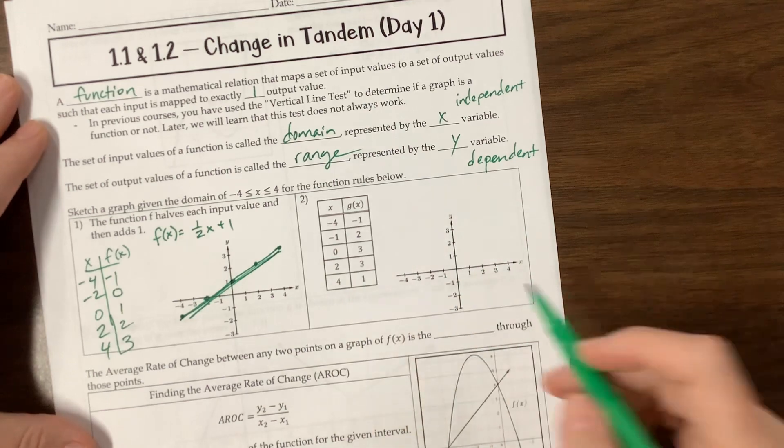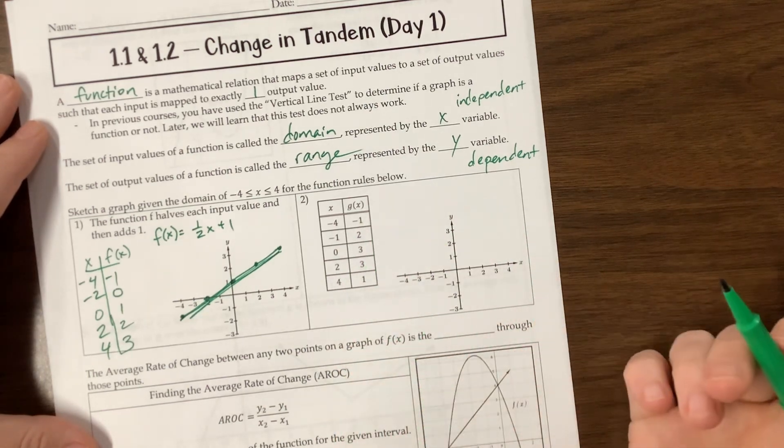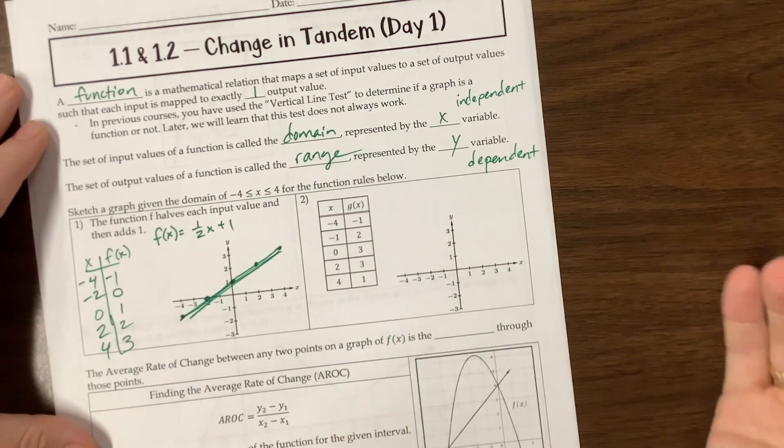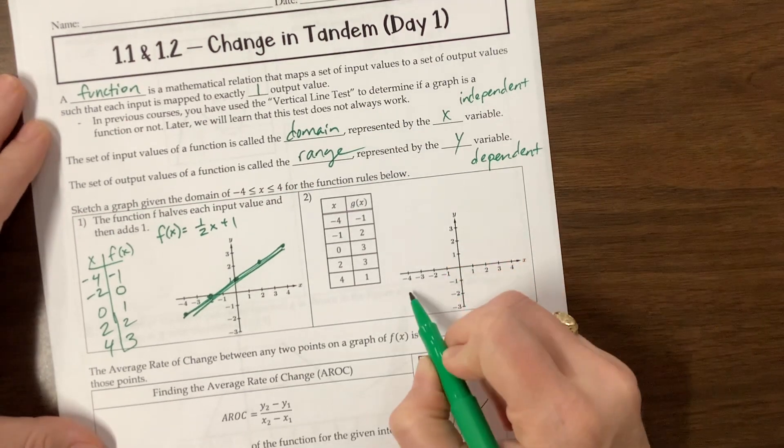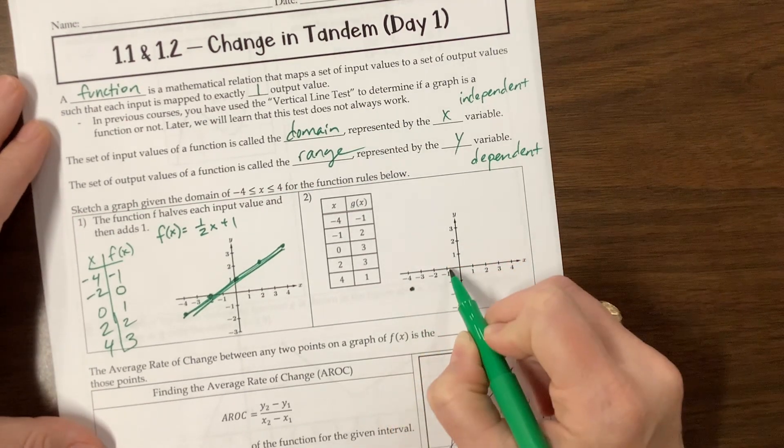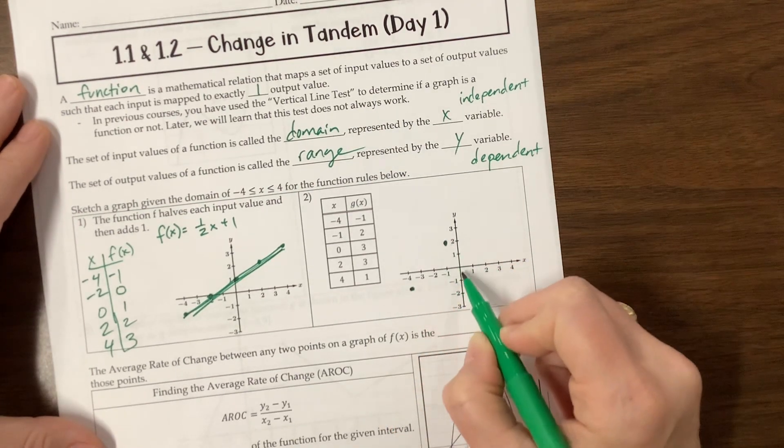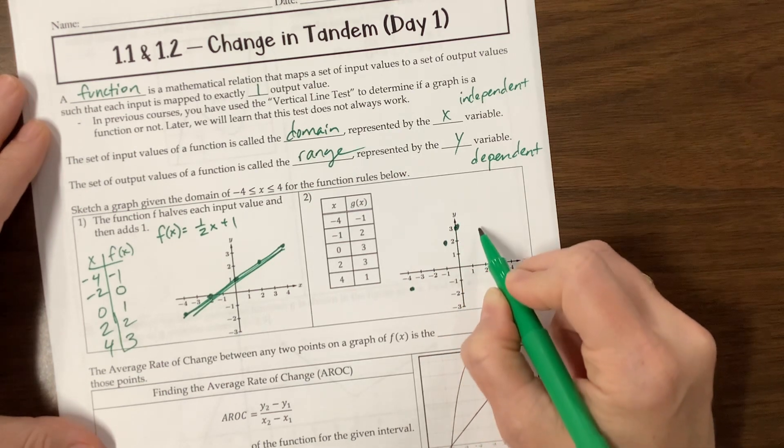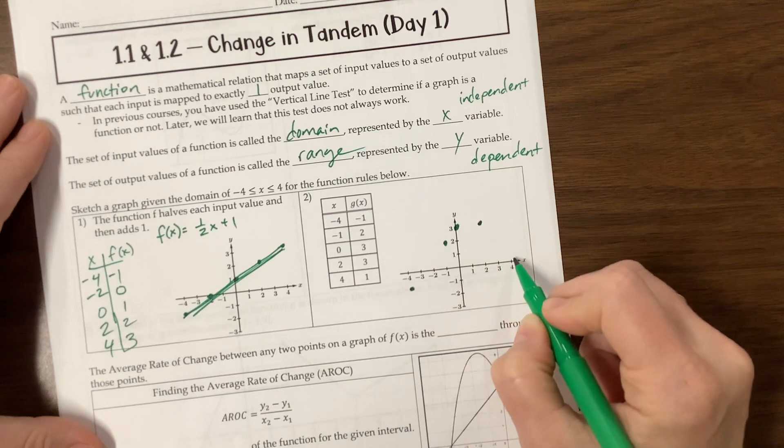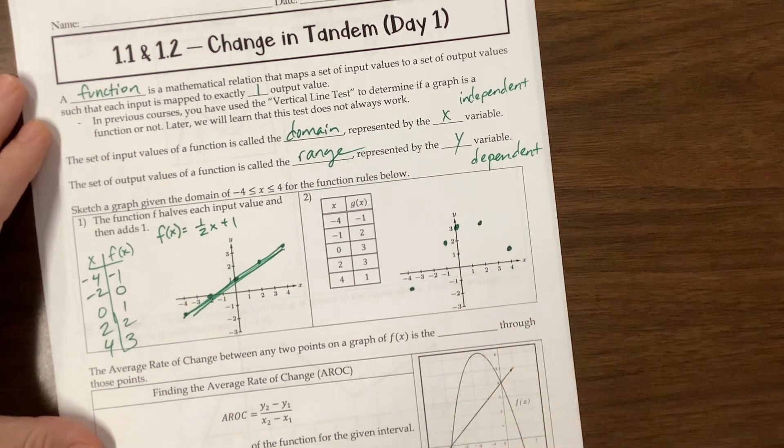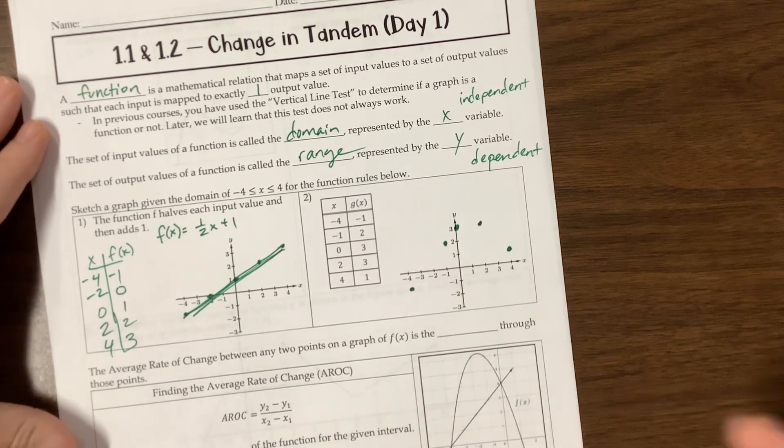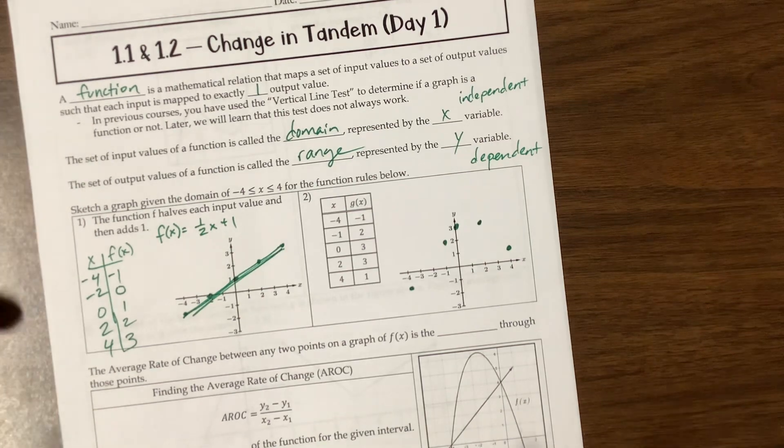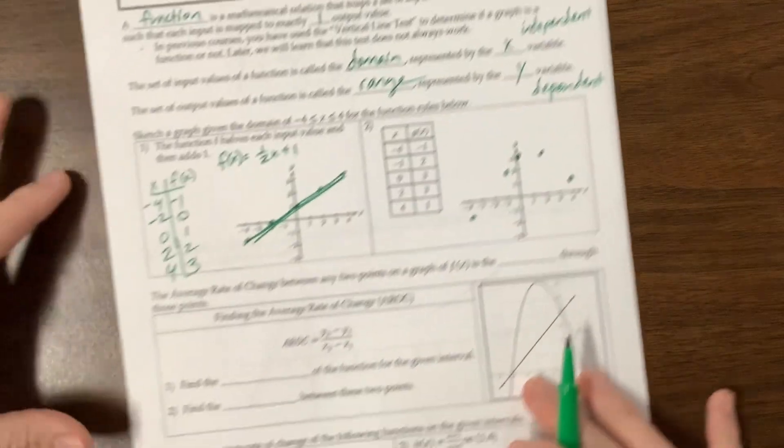The next one, all they've given us are these, what is that, 5 points. And we don't know anything that's happening between them, so we would just plot those points. Negative 1, 2, I'm roughly in the right spot. 0, 3. I'm back to, where am I? 2, 3, 4, 1-ish, something like that. 1, 2, 3, 4, 5. We don't know how they're connected, so we wouldn't want to draw any way to connect them.